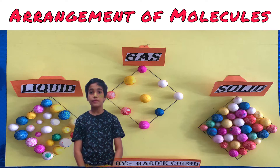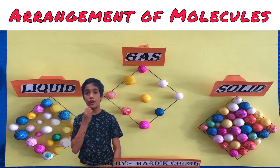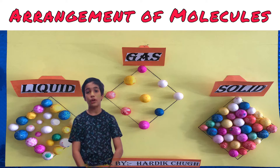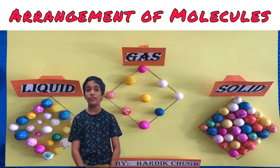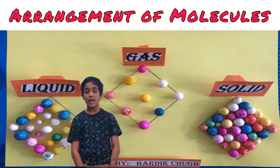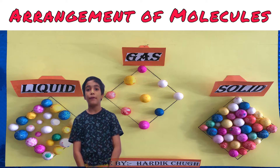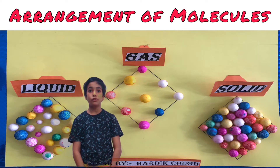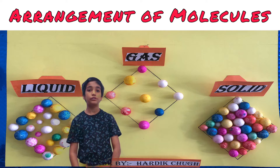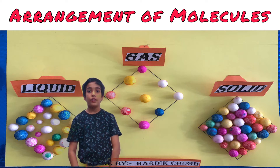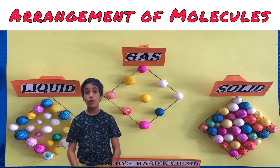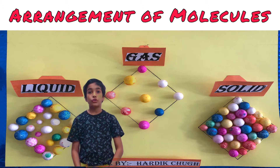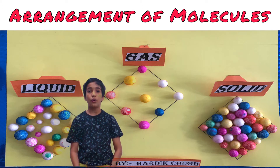As you can see, in this model there are three boxes. The first box is of solid, the second one is of liquids, and the last and third one is of gases. Solids have closely packed molecules so they cannot be broken easily. Liquids have loosely packed molecules so they can flow anywhere. Gases have very very loosely packed molecules so gases can go anywhere.